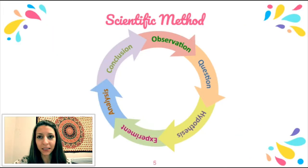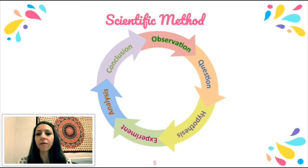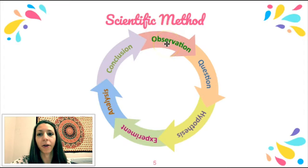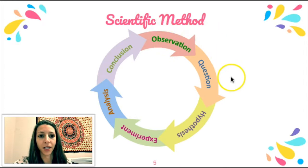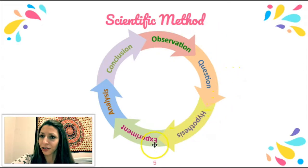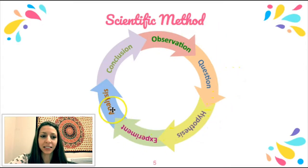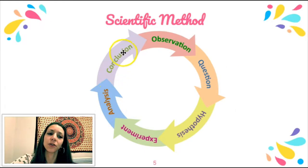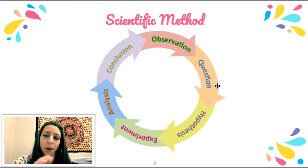You've probably seen in other science classes some version of the scientific method. It may look like a circle where you start with an observation about something in the world or a general phenomenon, then ask a question, generate a hypothesis, experiment, analyze, and conclude — which can then lead to more observations.